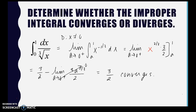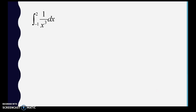When looking at these functions — and this is important for your test — identify the domain restriction if it exists. If that restriction is one of the boundaries or falls within the interval, you have to set it up as an improper integral with a limit. For the integral from -1 to 2 of 1 over x³, the domain restriction is x cannot equal 0, and 0 is inside the interval, so we need two limits.